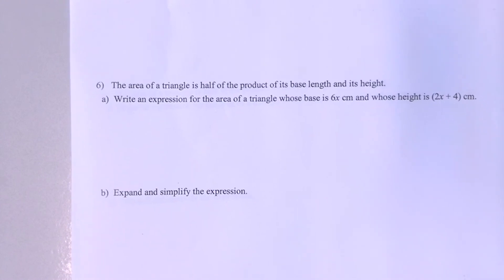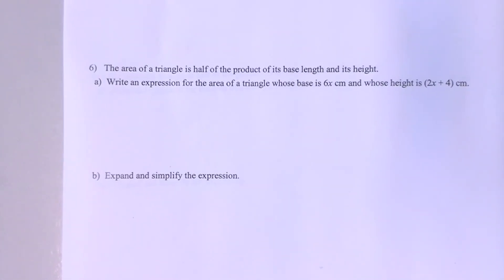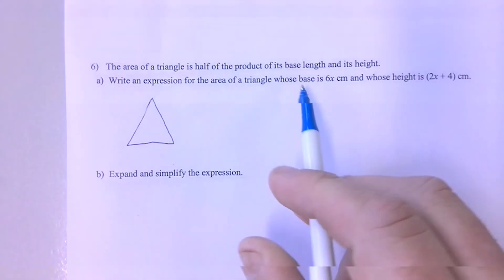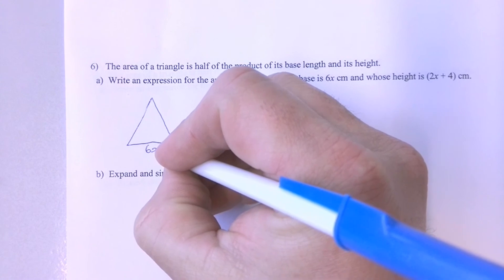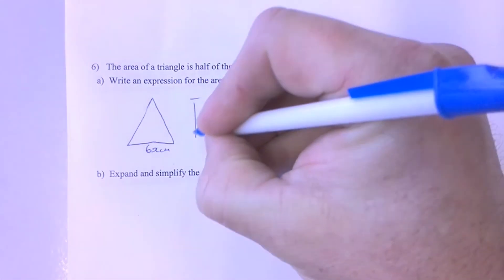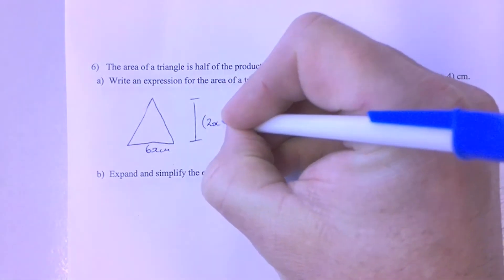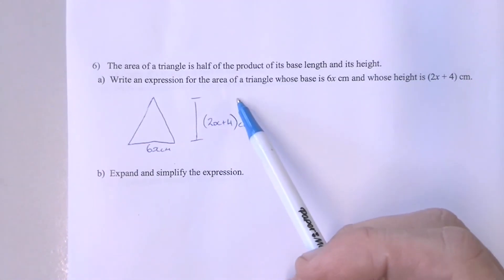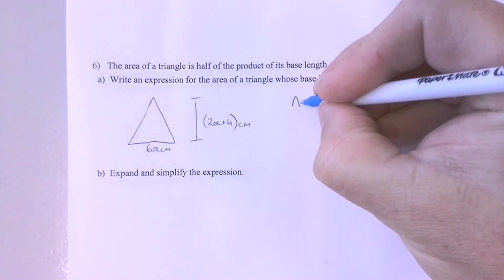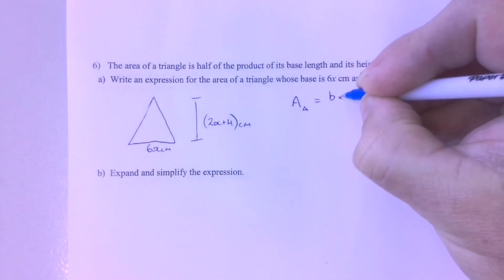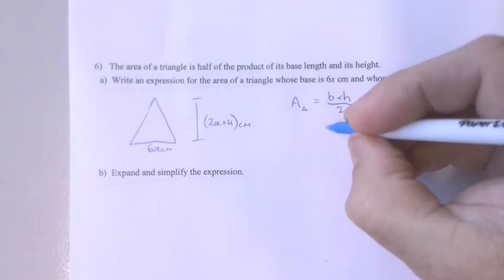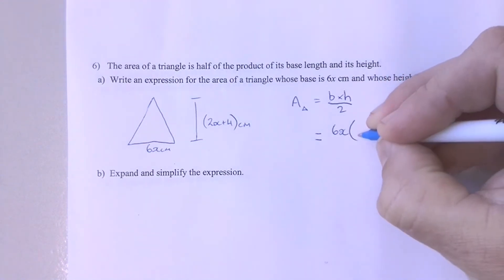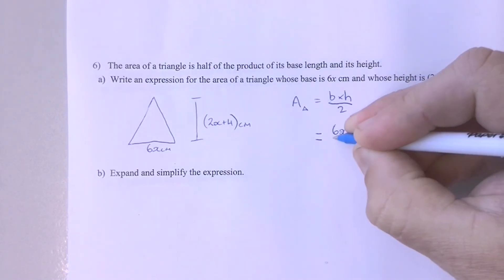Question 6A is asking us to find the area of this triangle. So we're going to start off by drawing a triangle to make it nice and clear. It says that it's got a base of 6X centimetres and a height of 2X plus 4 centimetres. Question 6A is asking us to write an expression for the area of this triangle. We know the rule for the area of a triangle is base times height divided by 2, or half the base times the height. So we'll write in our expression: a base of 6X multiplied by 2X plus 4, all divided by 2.